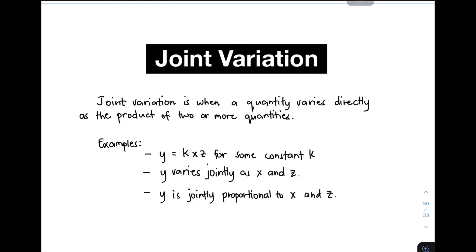Joint variation is when a quantity varies directly as the product of two or more quantities. This is the fourth topic we have in variation — we already have direct, inverse, and combined. Before we discuss joint variation more deeply, just remember that combined variation is the combination of direct and inverse variation, but joint variation is the combination of two direct variations.